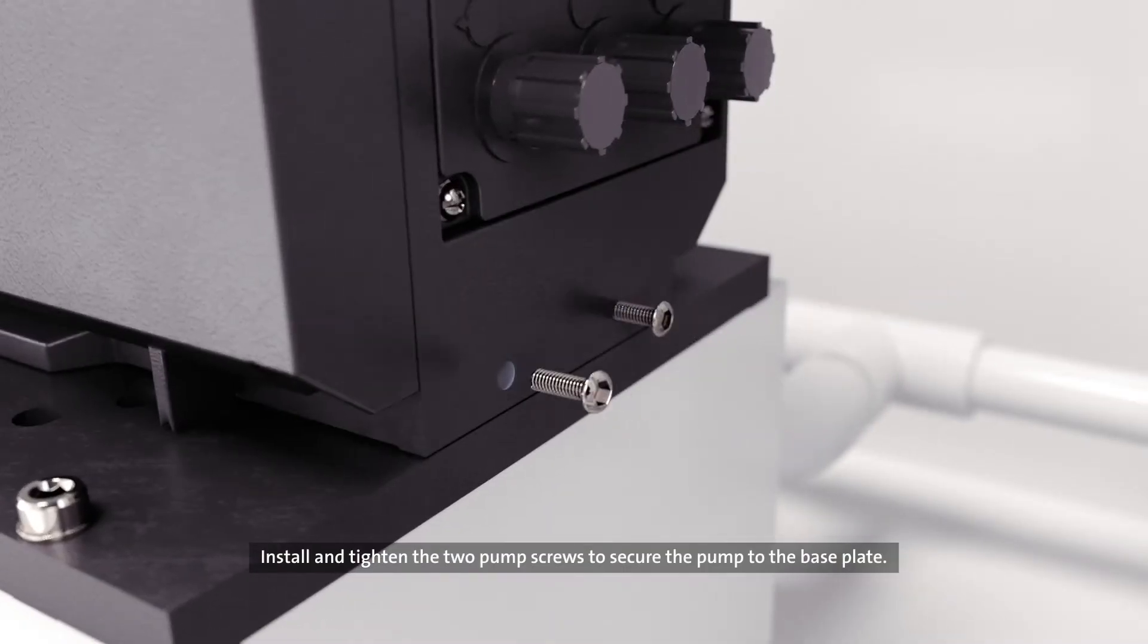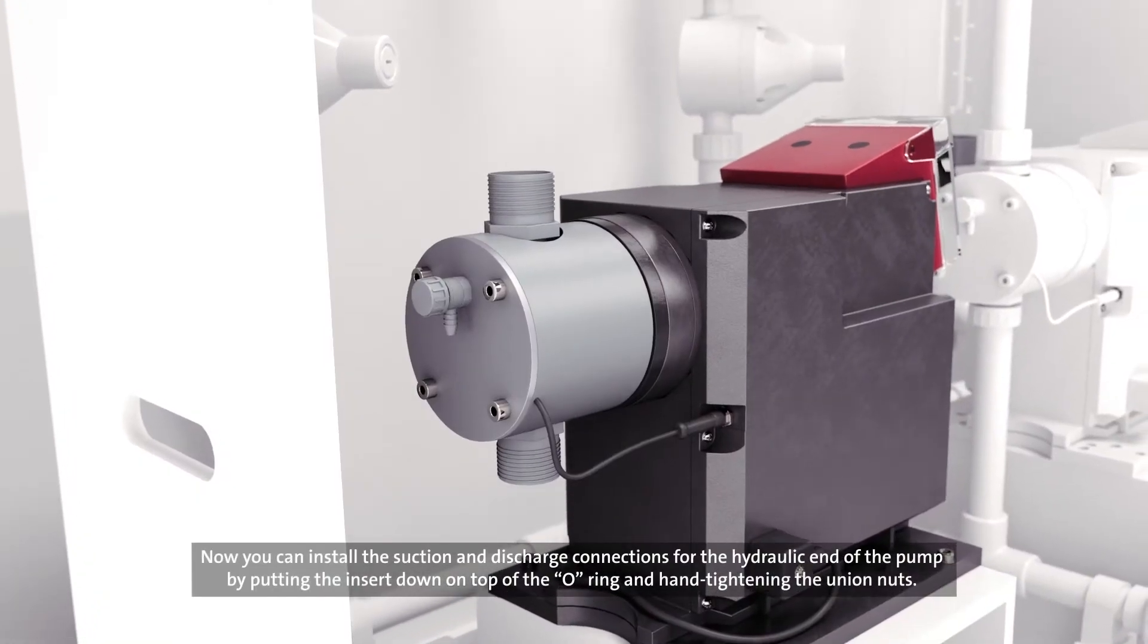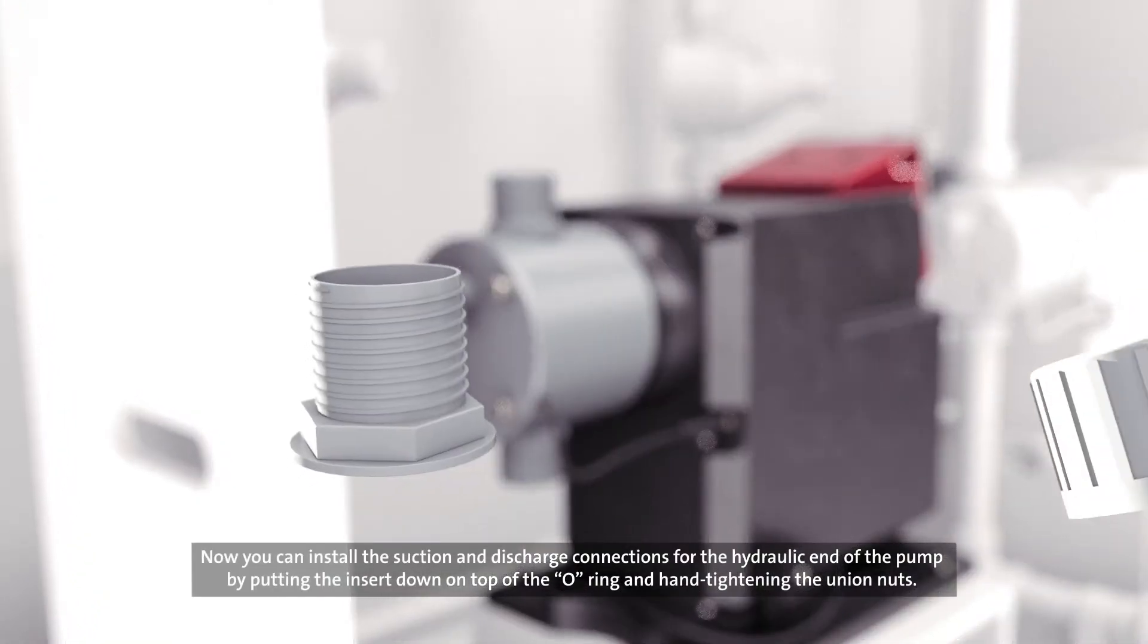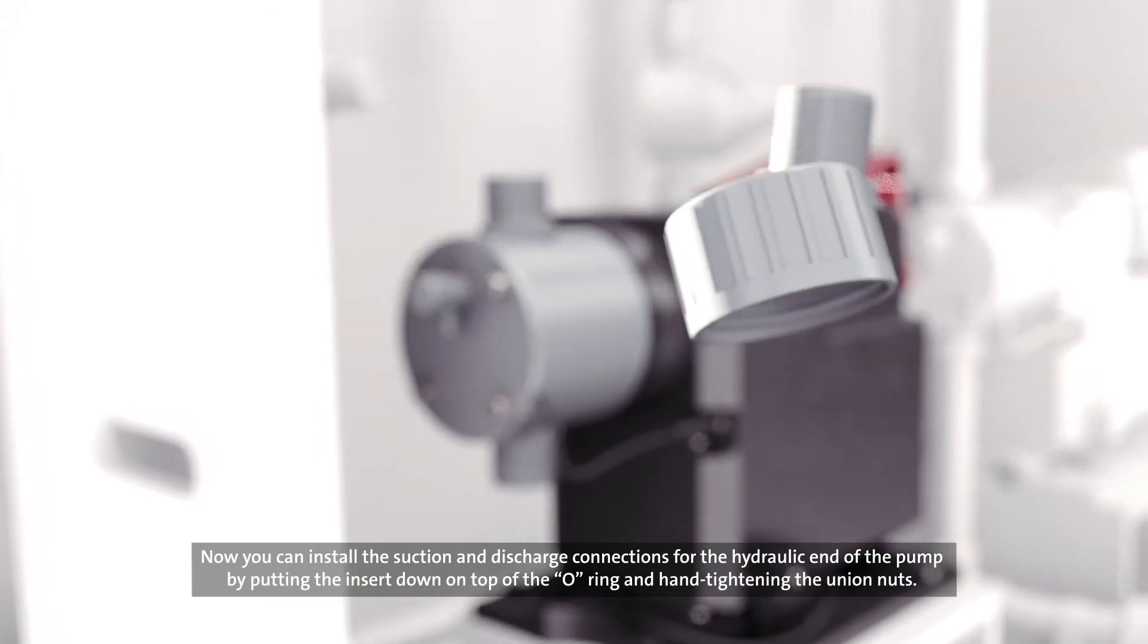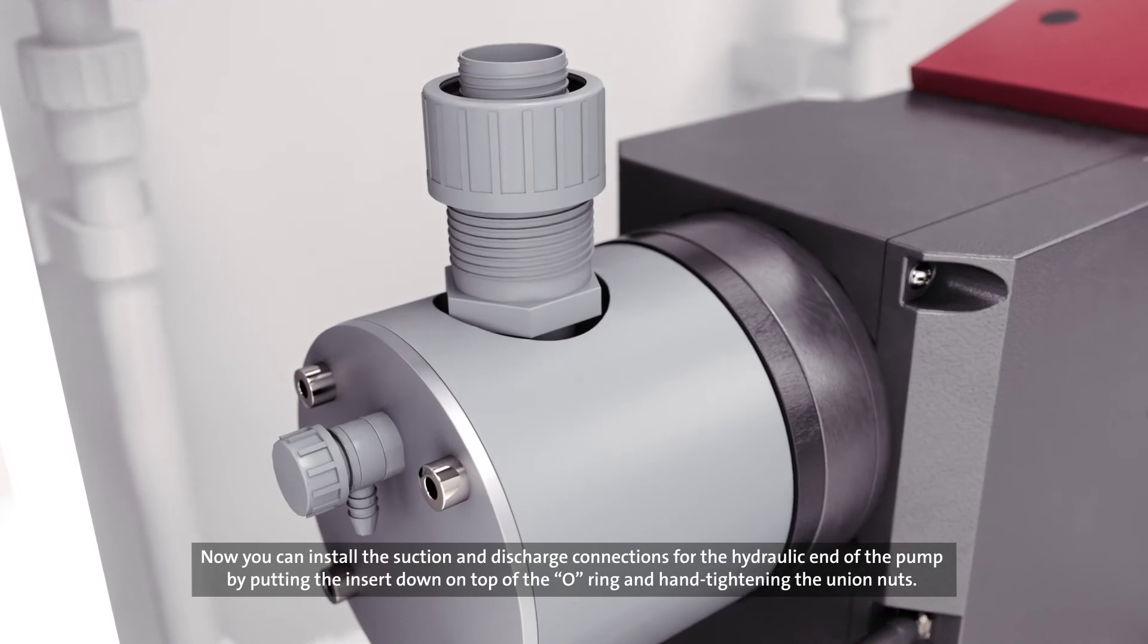Install and tighten the two pump screws to secure the pump to the base plate. Now you can install the suction and discharge connections for the hydraulic end of the pump by putting the insert down on top of the O-ring and hand tightening the union nuts.